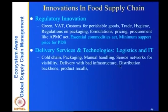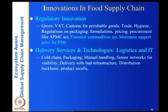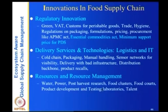Other innovations include distribution backbone improvements and product recalls. In food supply chains, if food poisoning occurs, it may be necessary to communicate with customers about affected products. Resources and resource management innovations include water, power, post-harvest research, food clusters, food courts, product development and testing labs, and talent.